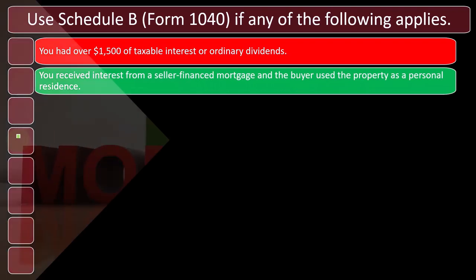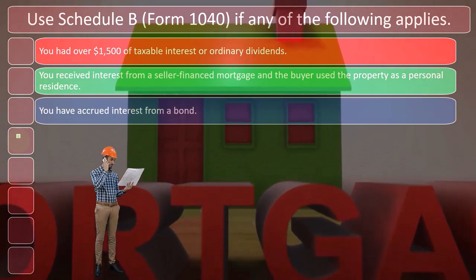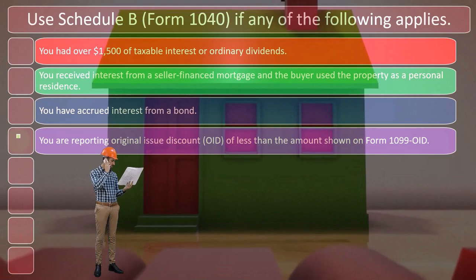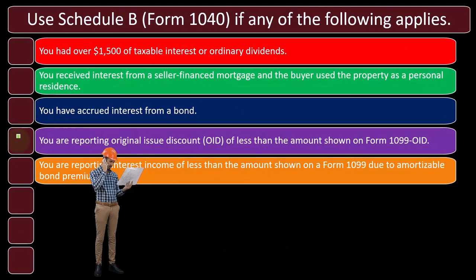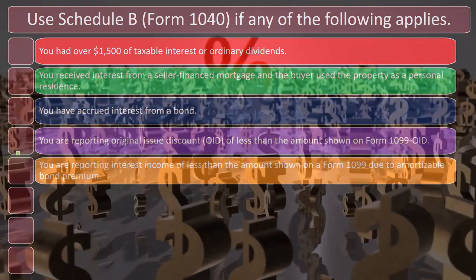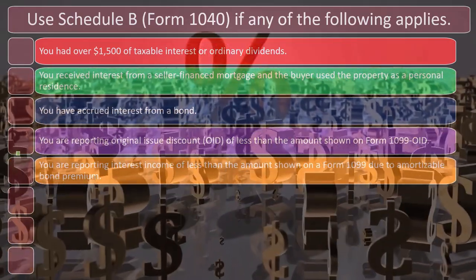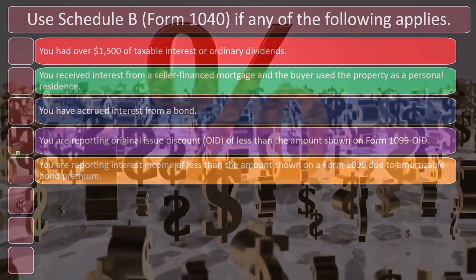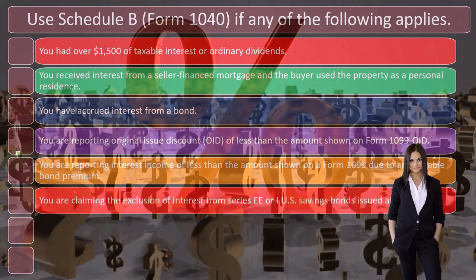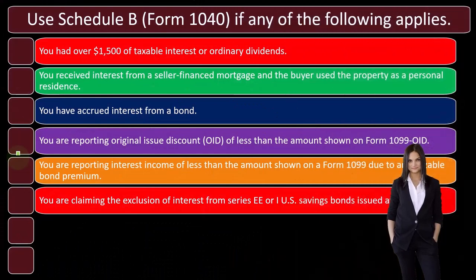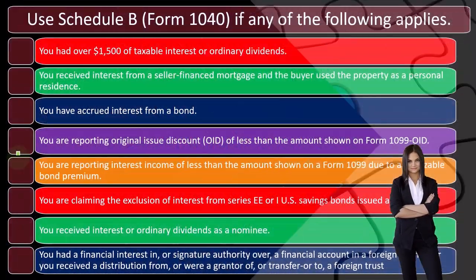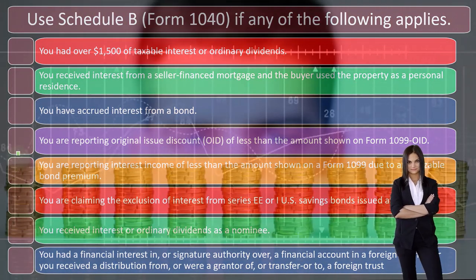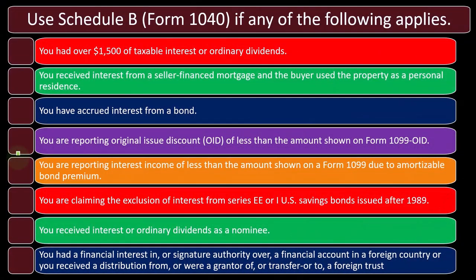Other conditions requiring Schedule B include: receiving interest from a seller-financed mortgage where the buyer used the property as a personal residence; having accrued interest from a bond; reporting original issue discount (OID) of less than the amount shown on Form 1099-OID; reporting interest income less than shown on a 1099 due to amortized bond premium; claiming exclusion of interest from Series EE or I US savings bonds issued after 1989; receiving interest or dividends as a nominee; or having a financial interest or signature authority over a foreign financial account, or receiving a distribution from or being a grantor of a foreign trust.